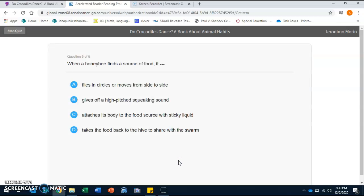Question number five: When a honeybee finds a source of food, it A: flies in circles and moves from side to side, B: gives off a high-pitched squeaky sound, C: attaches its body to the food source with sticky liquid, or D: takes the food back to the hive to share with the swarm. Good job boys and girls, A: flies in circles and moves from side to side, 'cause they're dancing. Remember, honeybees do dance.